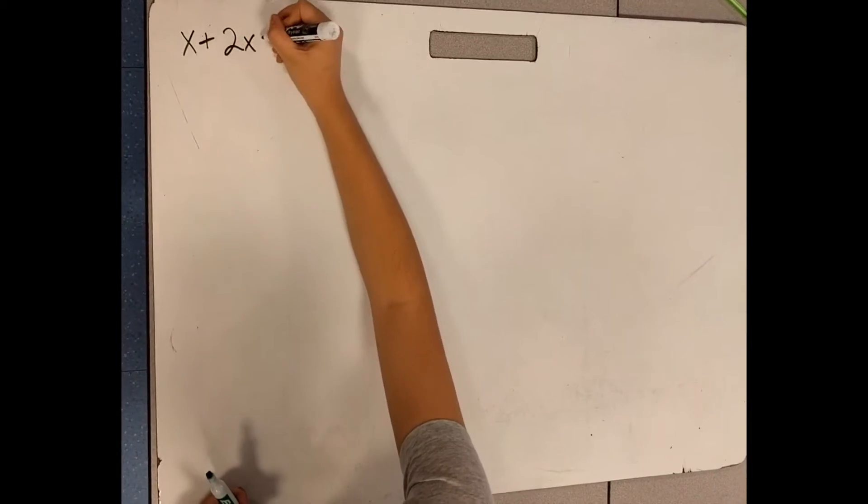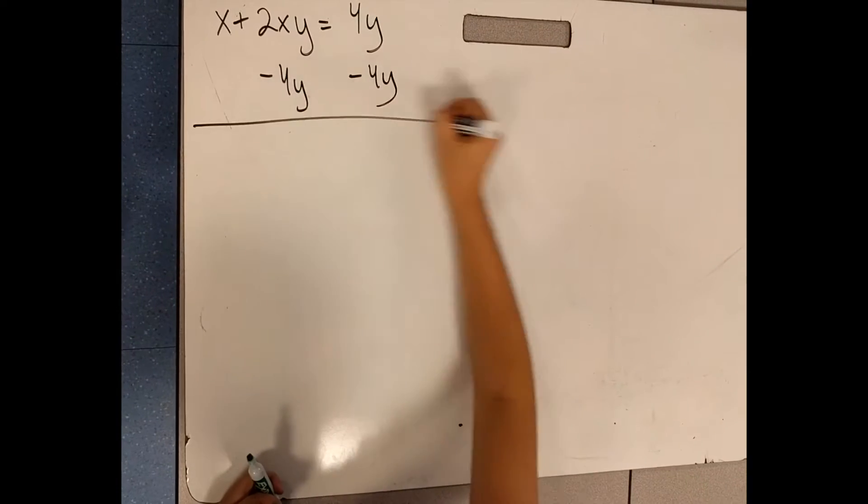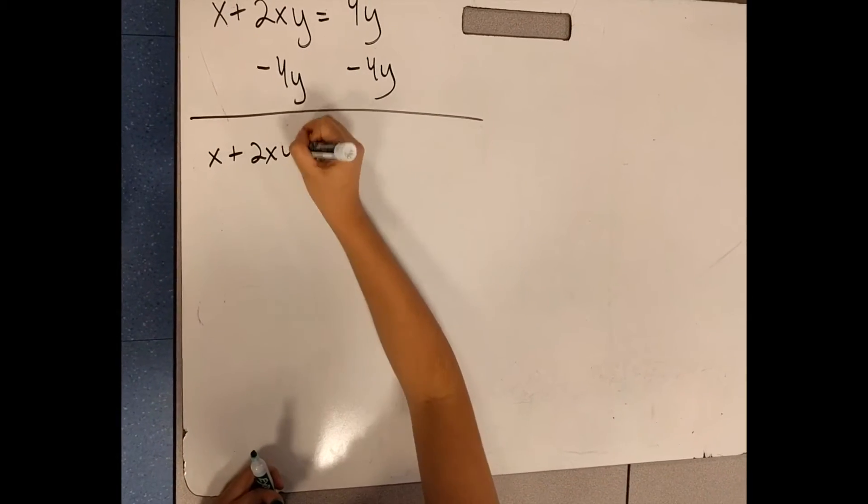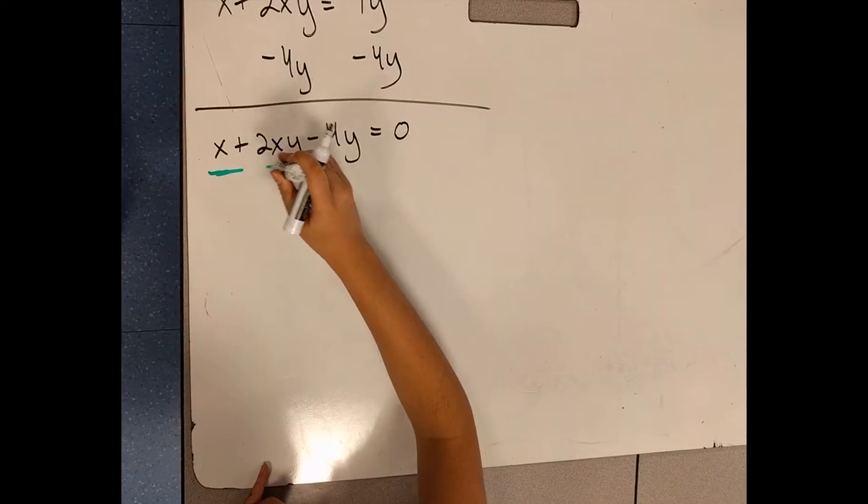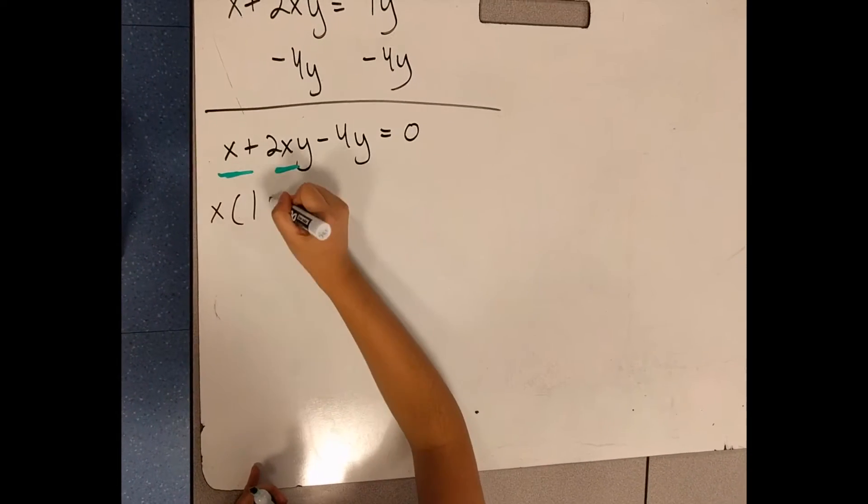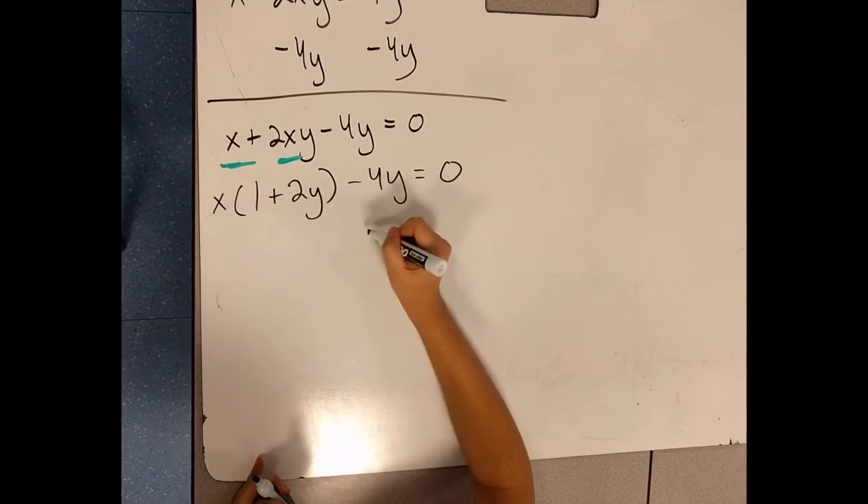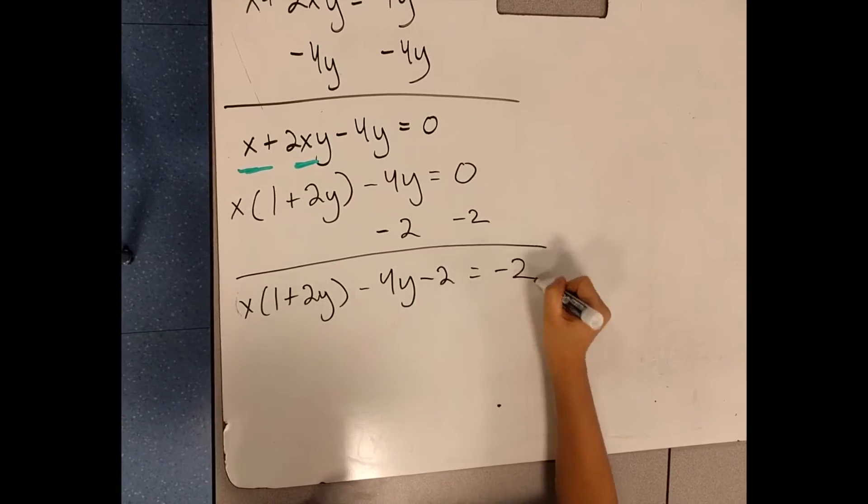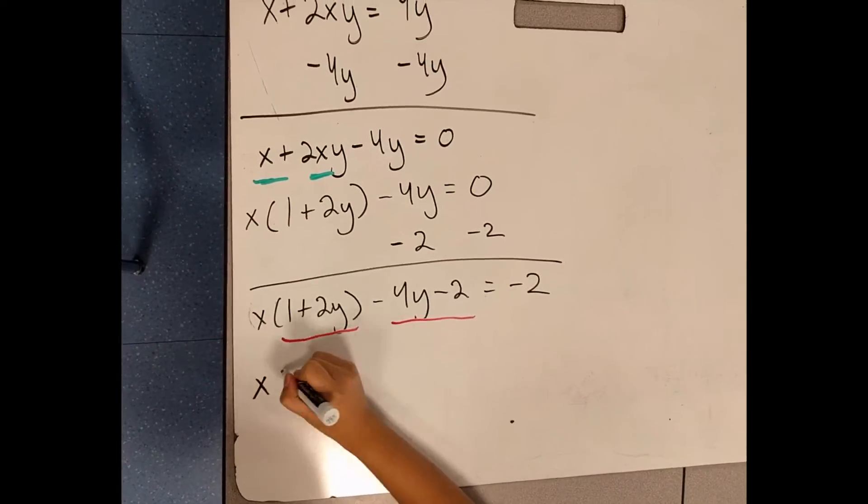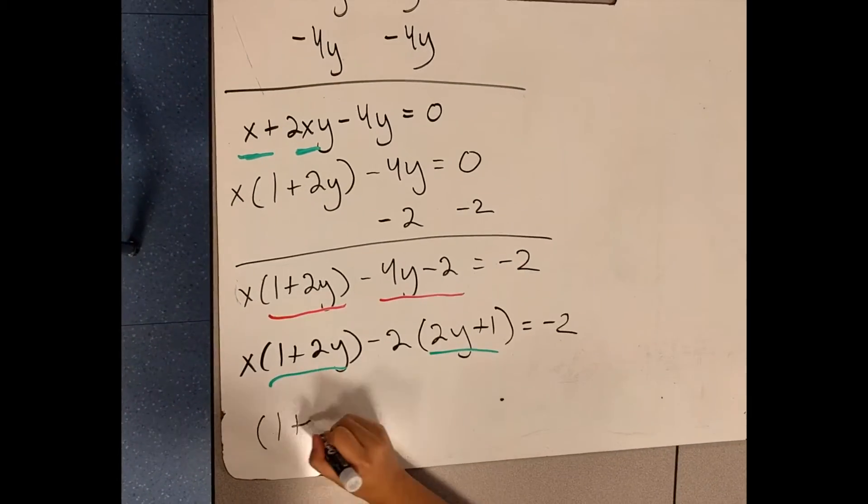Part C asks us to find all integer ordered pairs of x plus 2xy equals 4y. We can begin by factoring out the x to obtain x times (1 plus 2y) equals 4y. We can then subtract 4y from both sides. Then we can subtract 2 from both sides. We can now factor and simplify further the left side. By factoring out 2y plus 1, we obtain (x minus 2) times (1 plus 2y) equals negative 2.